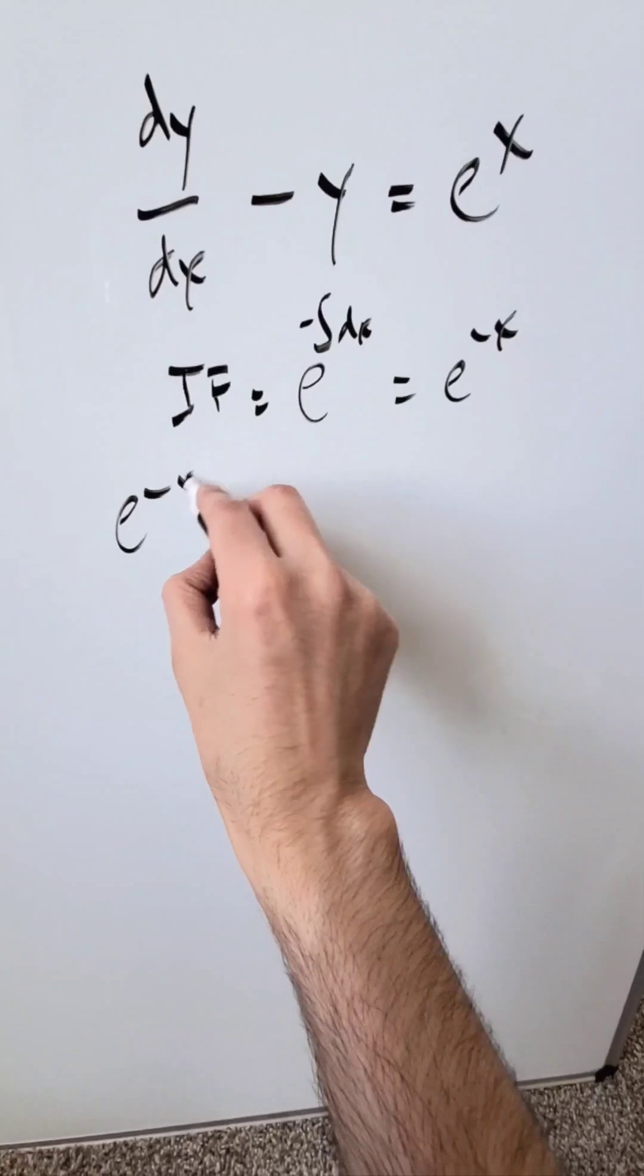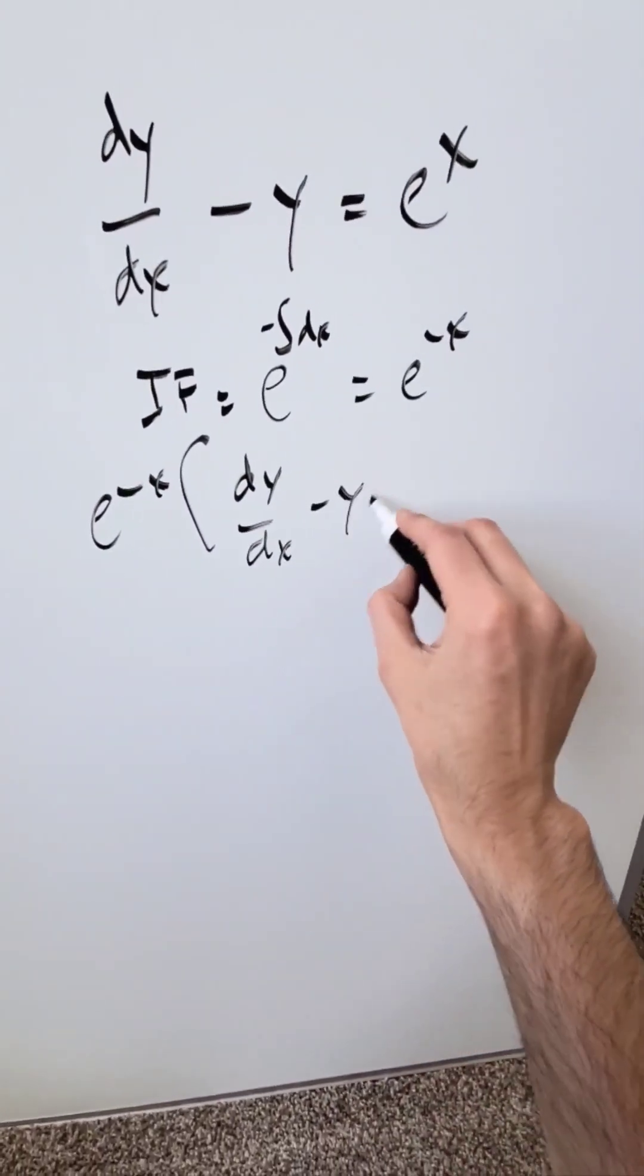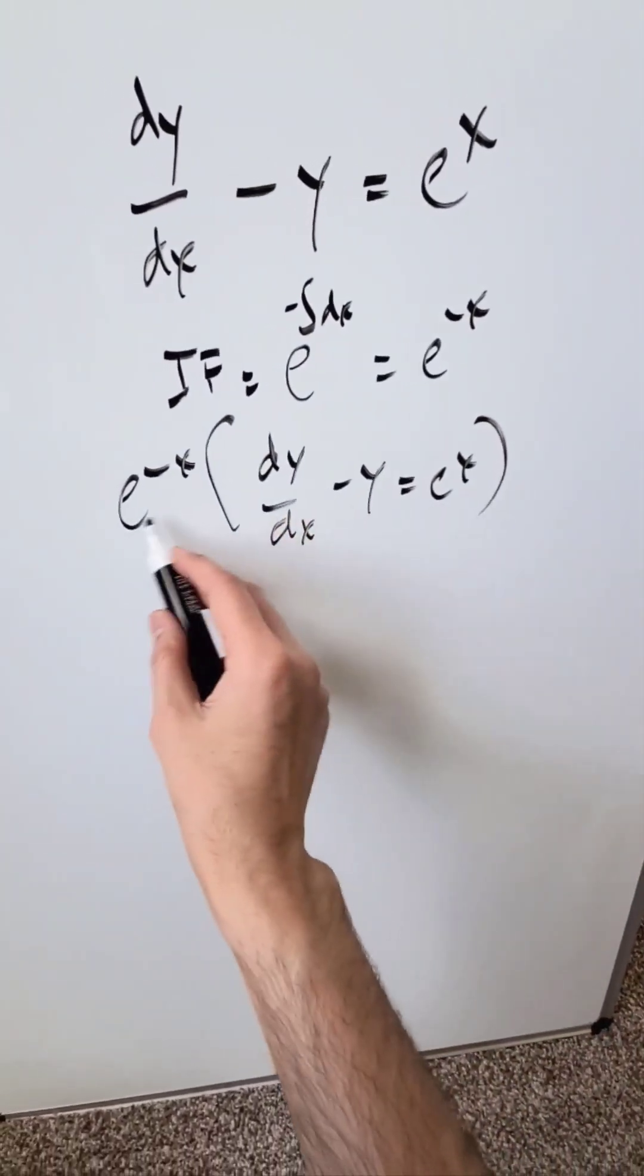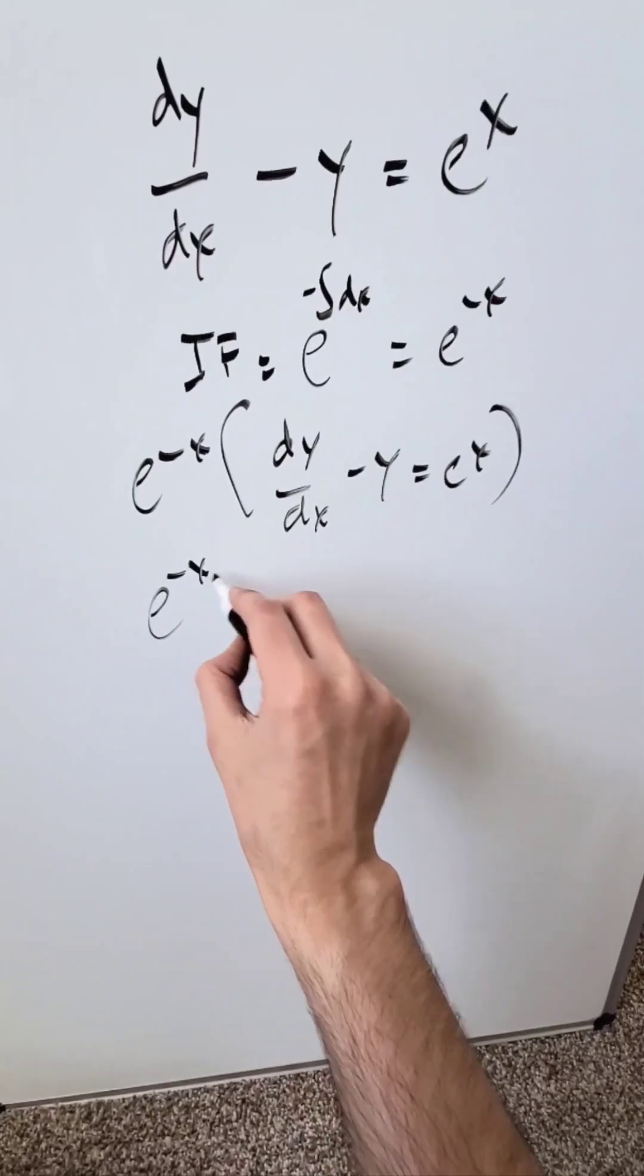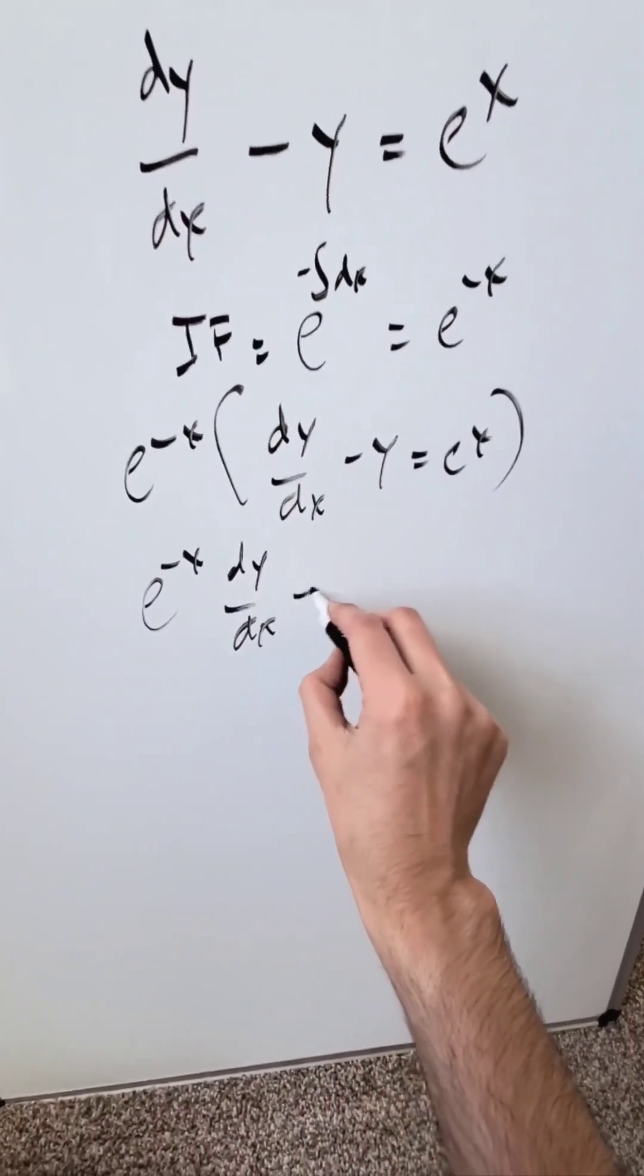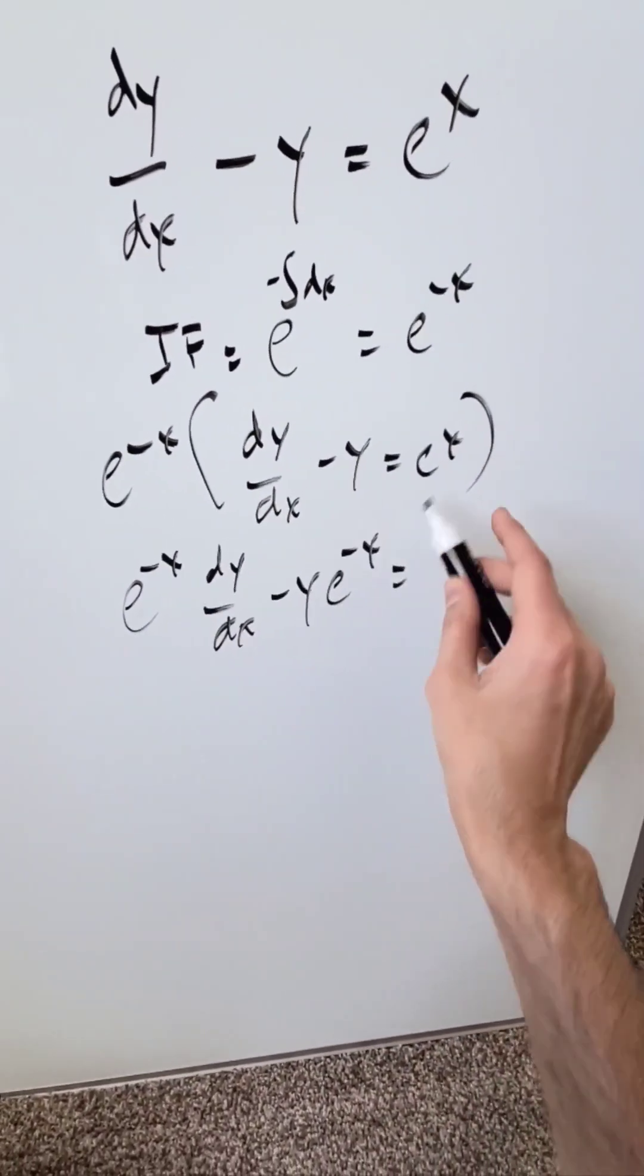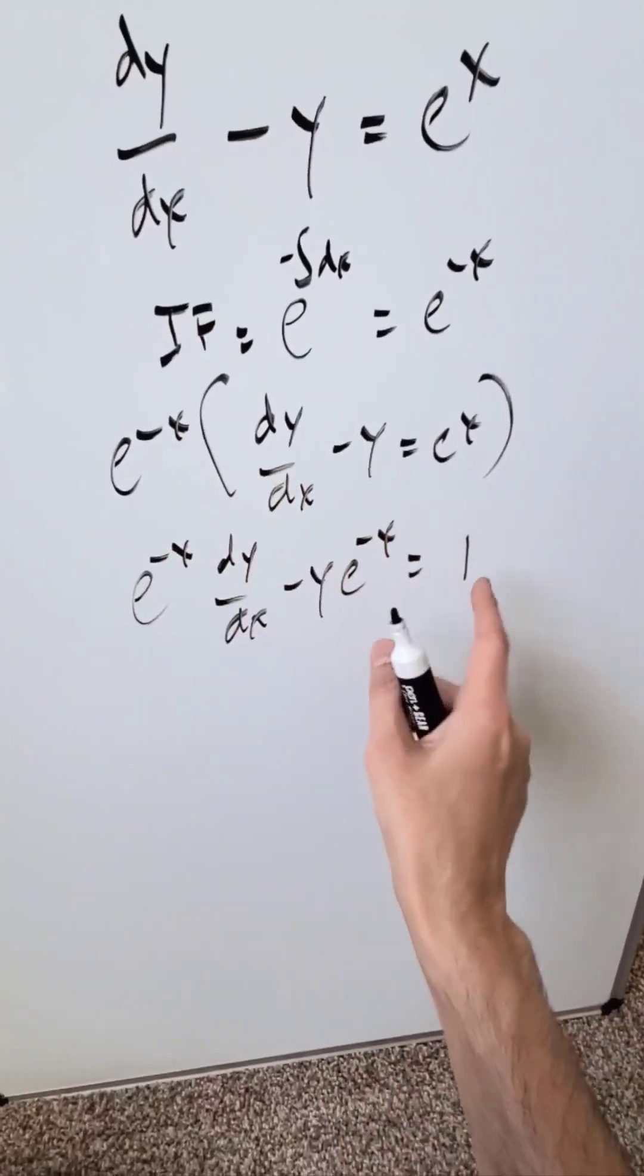You're going to multiply that across your differential equation and see what happens. That will start the process. You're getting here e^(-x) dy/dx minus y e^(-x) is equal to 1. This times its reciprocal. It's a 1.